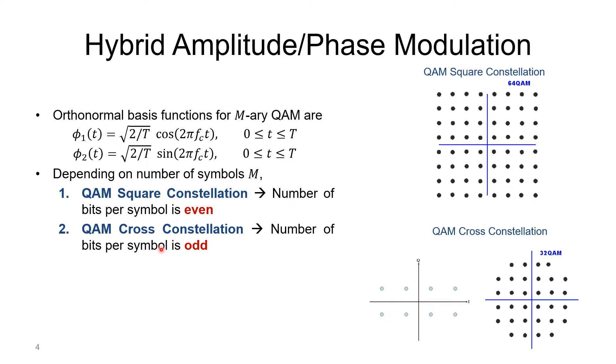However, if the number of bits per symbol is odd, like 8 possibilities, I cannot arrange them in a square. We call it cross constellation. For example, the case of 32: log base 2 of 32 would be 5, which is odd. We cannot make it in a square, so we have to drop some points.